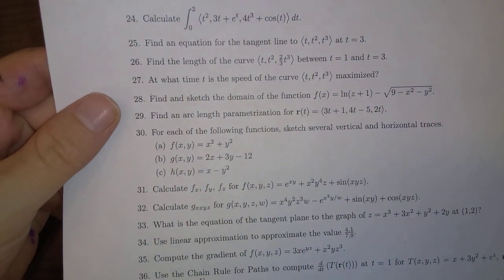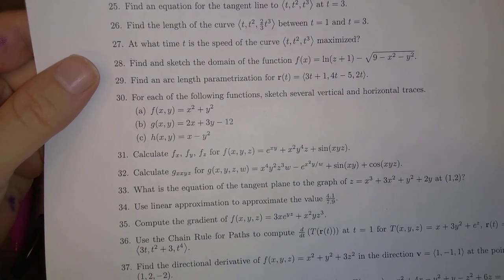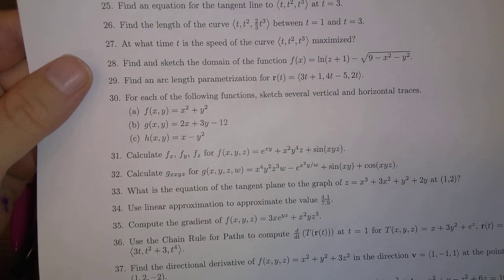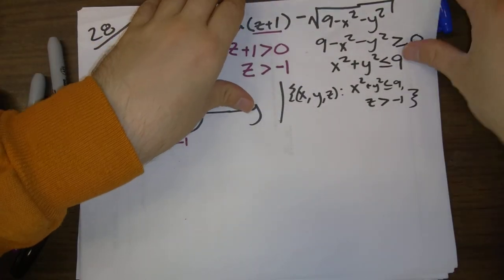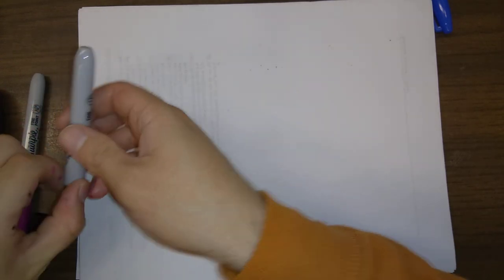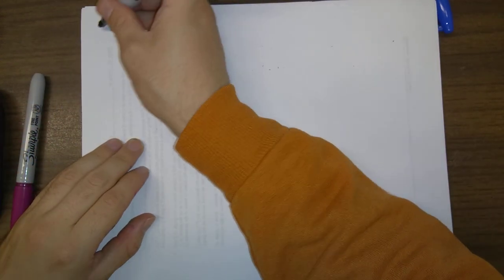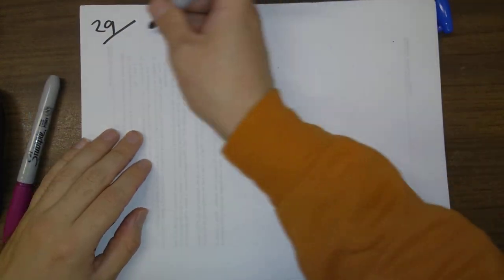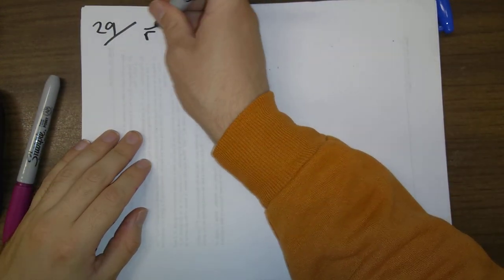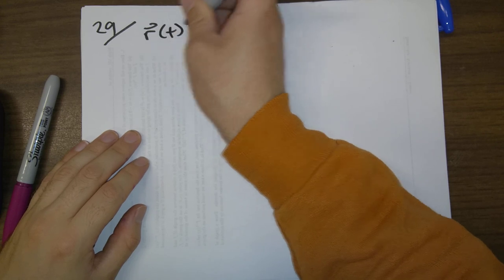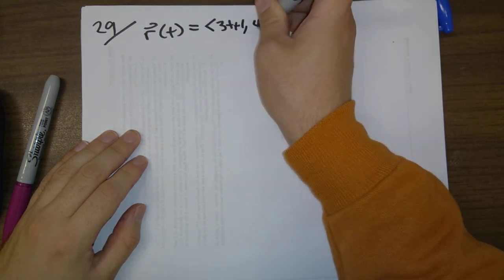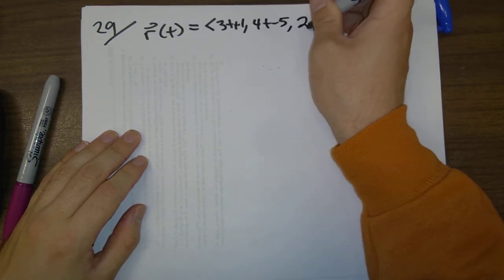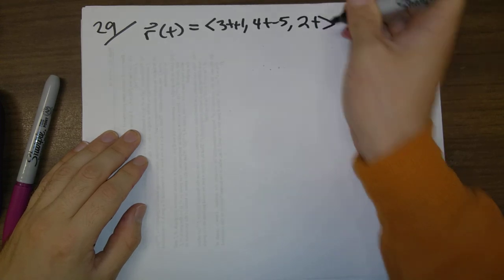Problem 29: Find the arc-length parametrization for that function. Arc-length parametrization problems are always good to practice. For problem 29, r of t is (3t + 1, 4t − 5, 2t).